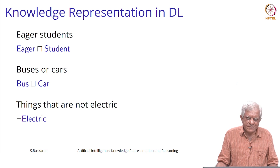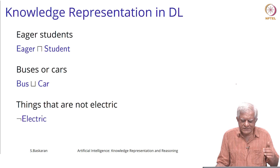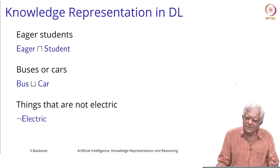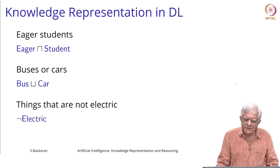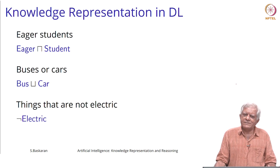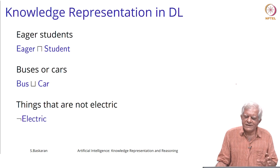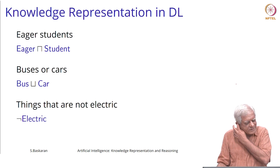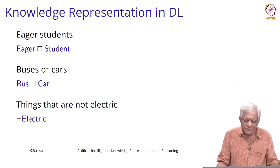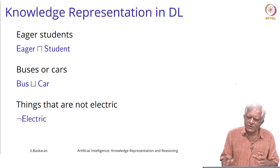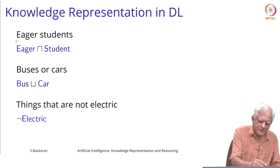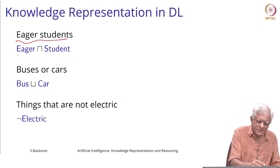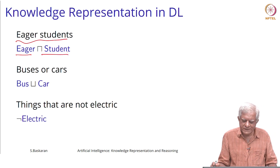Welcome back. We have been looking at description logics and let us look at some statements we can make in description logics. Description logics are logics of noun phrases — they allow us to describe noun phrases essentially, and of course relations between concepts when we move on to sentences. When talking about concepts, we can say for example that 'eager students' is the intersection of those who are eager and those who are students.